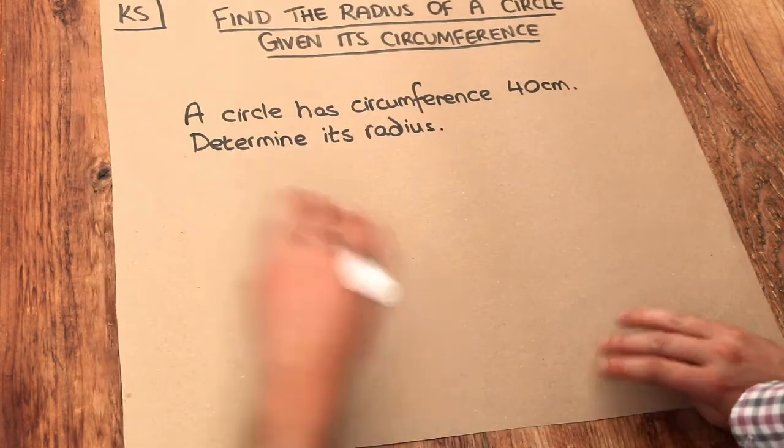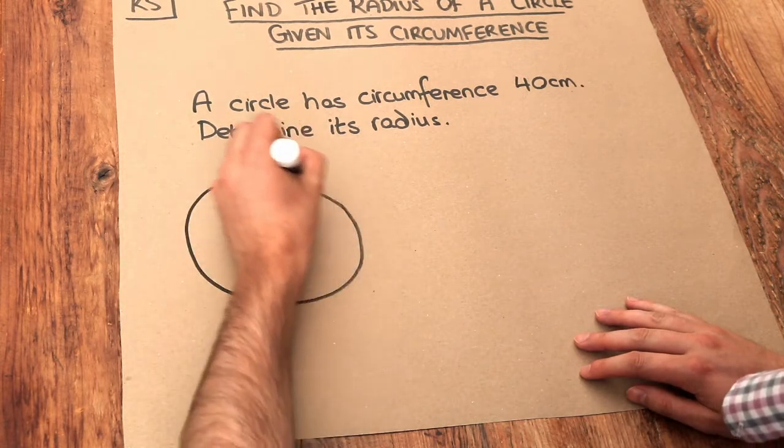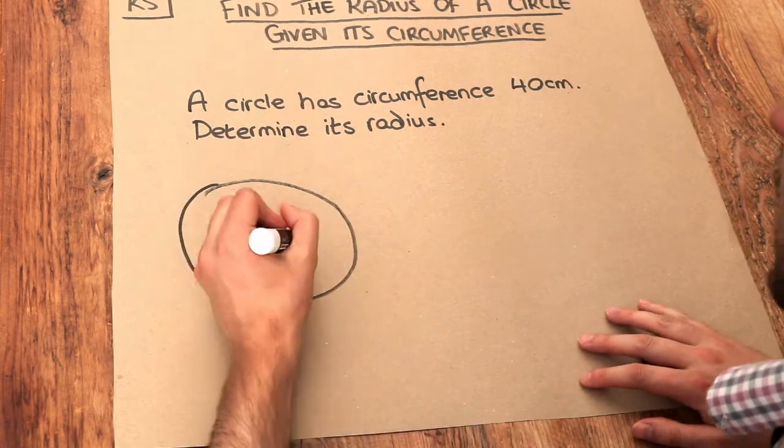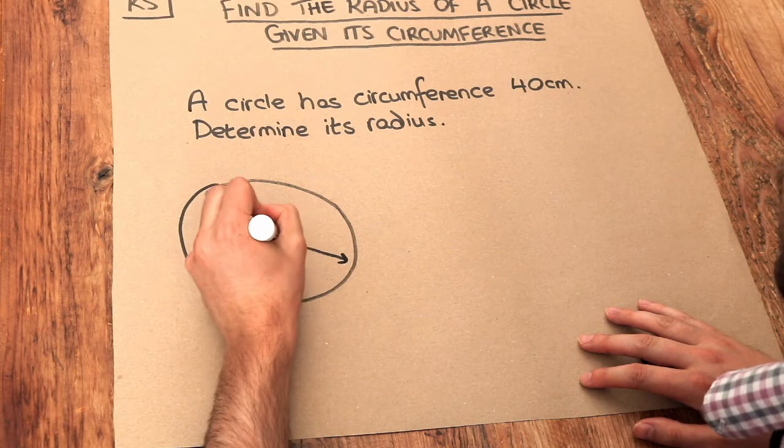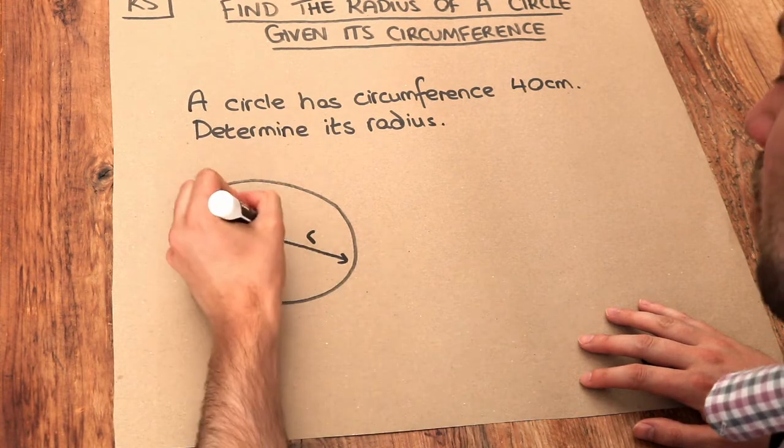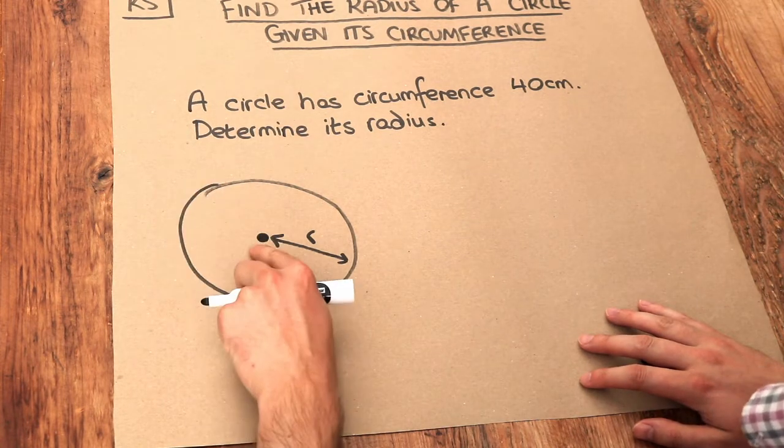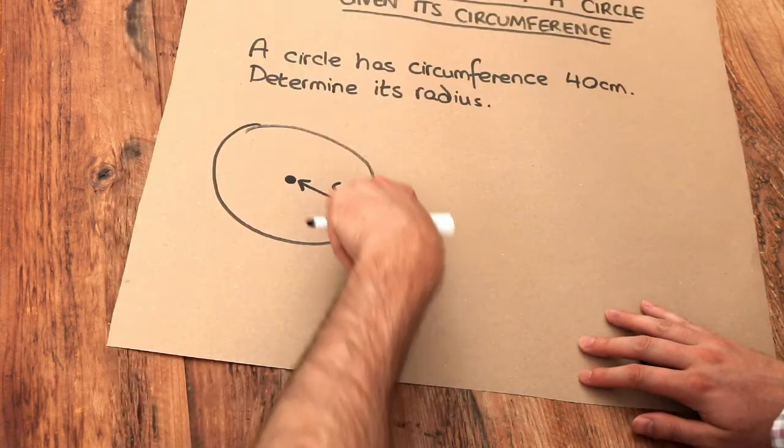Now let's remember back to the relevant formulae for a circle. If we have a circle like this and we've got the radius of the circle, R, remembering that the radius of the circle is the distance between the centre of the circle and the circumference, which is the perimeter.